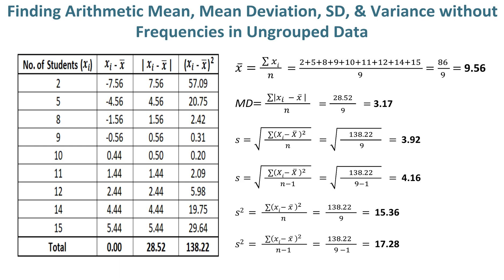For finding the mean deviation value without frequencies, the numerator value is 28.52 and the denominator value is 9. Thus, the mean deviation value in this example is 3.17. The standard deviation value without frequencies in Formula 1 is 3.92, and in Formula 2 is 4.16. The variance value without frequencies in Formula 1 is 15.36.